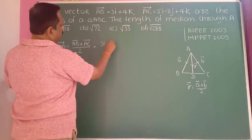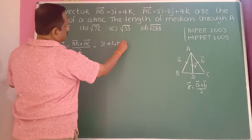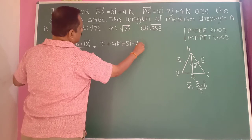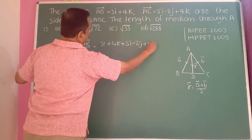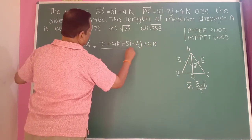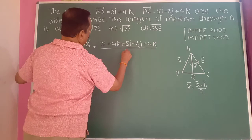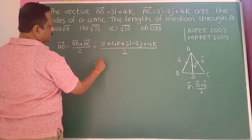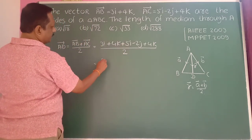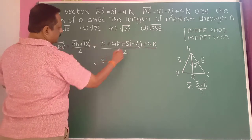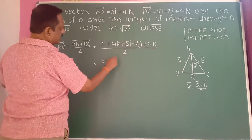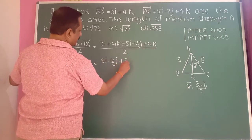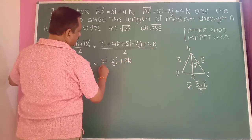So AD equals (3i + 4k) + (5i - 2j + 4k) divided by 2. Therefore: 5i plus 3i becomes 8i, then minus 2j, then 4k plus 4k becomes 8k, all divided by 2. So AD equals 4i minus j plus 4k.